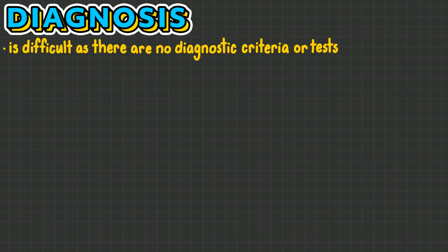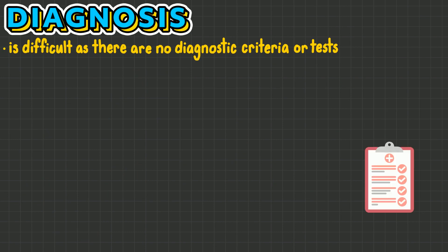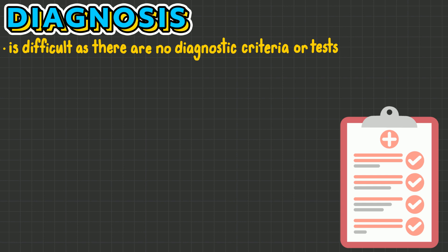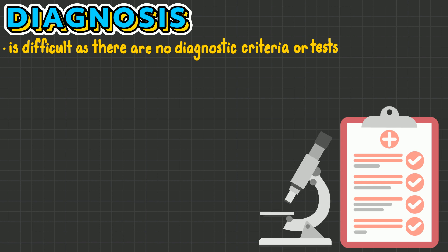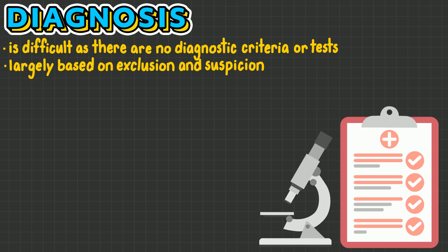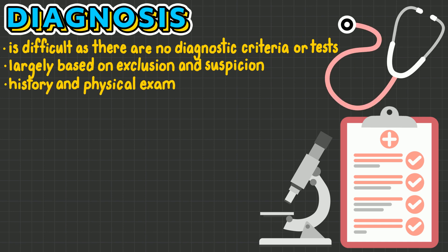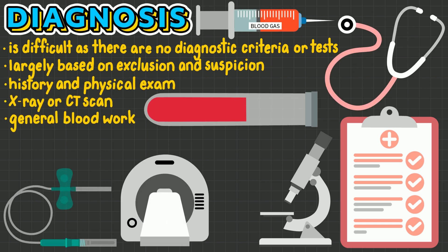Diagnosis of fat embolism syndrome is difficult as there are no diagnostic criteria or tests. Diagnosis is largely based on exclusion and suspicion. A history and physical exam, x-ray or CT scan, and general blood work are completed to help support or disprove the diagnosis.